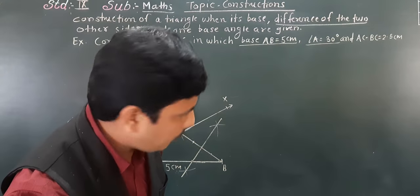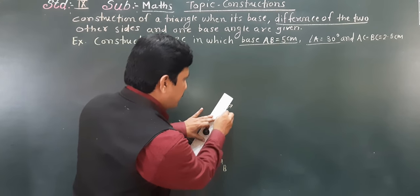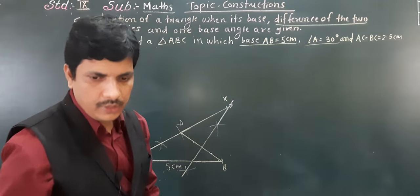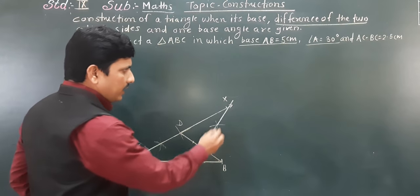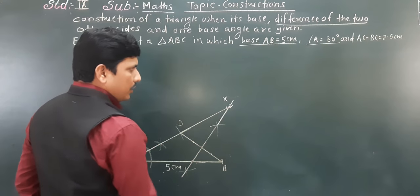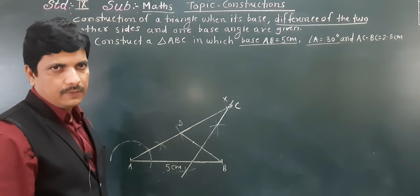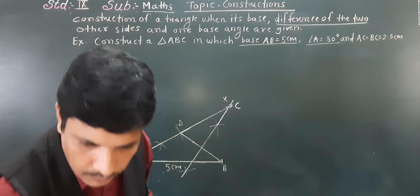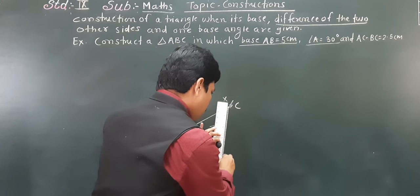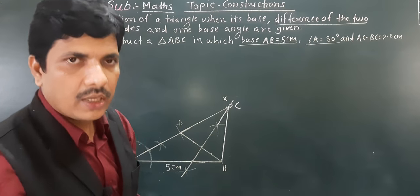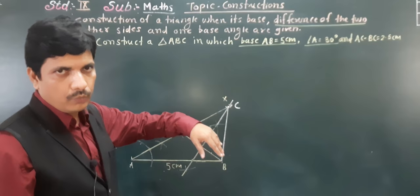Now we extend the bisector of DB. It will intersect with ray AX at a certain point — that intersection point is our required point C. So that point C is where the perpendicular bisector of DB meets ray AX. Finally, we join C to B.